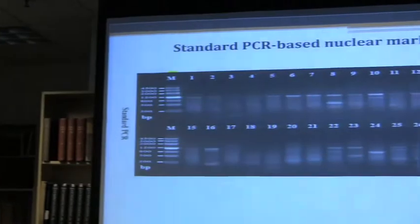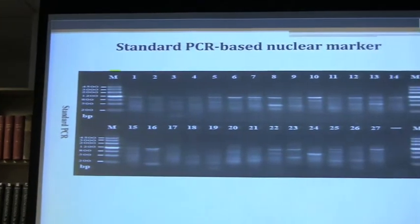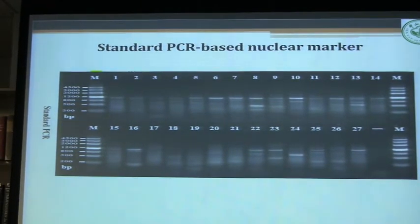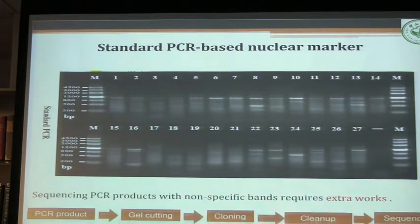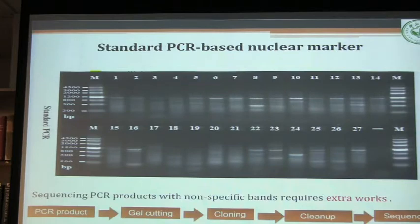You always need to optimize the PCR conditions or the primer design, which is a very annoying and time-consuming task. I can show you a very typical example of amplifying nuclear markers in wild animal series — this is a standard PCR-based nuclear marker amplification gel. Every lane is a species, and you always get this smear and a very weak band. If you do get a band, you always need extra work to purify it, like gel cutting or sometimes cloning. Getting a clean PCR fragment is not very easy.